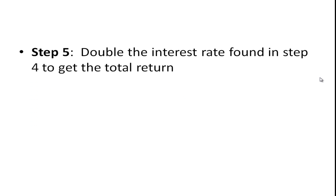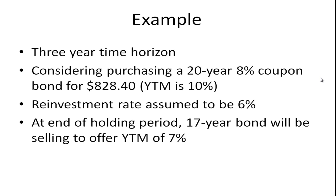And then the final step is that the return that we found in step four was a semi-annual rate. So in order to get that total return, we need to double the interest rate we found in step four. So let's take a look at an example.